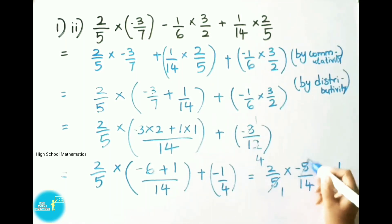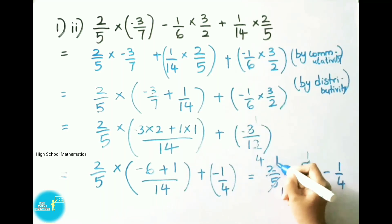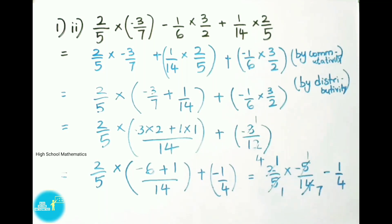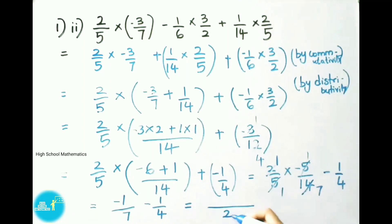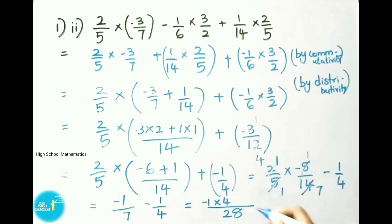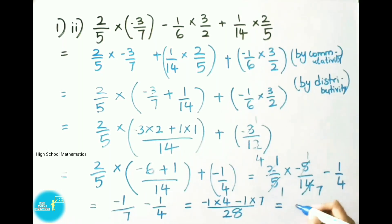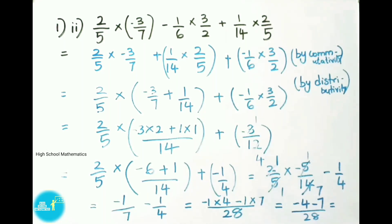Multiply numerators: 1 into minus 1, that is minus 1 by, 1 into 7, that is 7. Next, minus 1 by 4. That equals to, for 7 and 4, LCM is 28. Write down numerators: minus 1 into 28 is 4 times, next minus 1 into 28 is 7 times. So that equals to minus 1 into 4, that is minus 4, minus 1 into 7, minus 7 by 28. That equals to minus 4 minus 7, that is minus 11 by 28. So this is our answer.